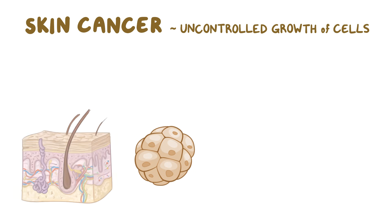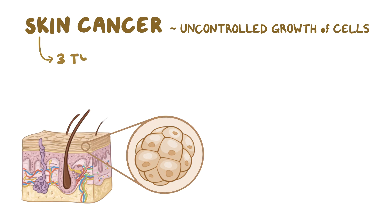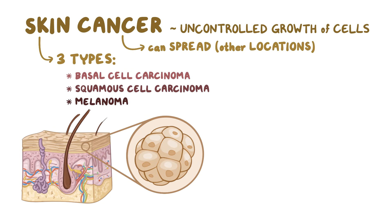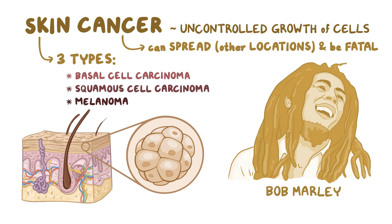Skin cancer is an uncontrolled growth of cells within the skin. There are three main types: basal cell carcinoma, squamous cell carcinoma, and melanoma. Some skin cancers can spread to other locations in the body and can be fatal, as seen with singer-songwriter Bob Marley, who died shortly after being diagnosed with melanoma.